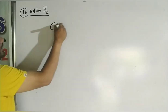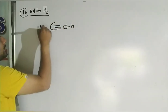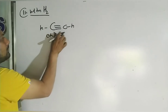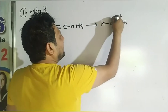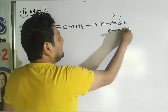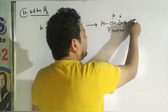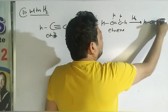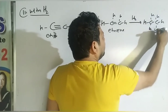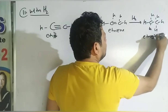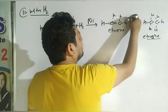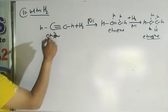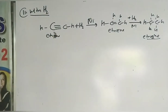With hydrogen: ethyne plus hydrogen — the triple bond becomes a double bond and two hydrogen atoms are added, giving ethene. Adding more hydrogen converts the double bond to a single bond, giving ethane. This reaction occurs in the presence of a catalyst — platinum or nickel.